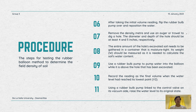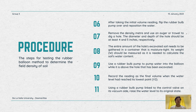Step 6: After taking the initial volume reading, flip the rubber bulb pump over and reposition the water. Step 7: Remove the density meter and use an auger to dig a hole. The diameter and depth of the hole should be at least 4 and 5 inches, respectively. Step 8: The entire amount of the hole's excavated soil needs to be gathered in a moisture-tight container and its weight should be measured, as it is needed to calculate the soil's water content. Step 9: Use a rubber bulb pump to pump water into the balloon while it is above the hole that has been excavated. Step 10: Record the reading as the final volume when the water level has reached its lowest point.